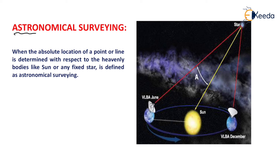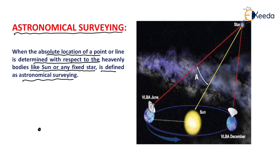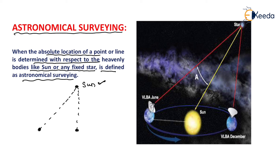What is astronomical surveying? When the absolute location of a point or line is determined with respect to heavenly bodies like the sun or any fixed star, it is defined as astronomical surveying. If we are able to find the location of any point on the surface of the earth with respect to fixed heavenly bodies like the sun or any other fixed star, that type of surveying is known as astronomical surveying. The position of the sun or any fixed star is constant, so we can determine our position on the surface of the earth by reference to them.